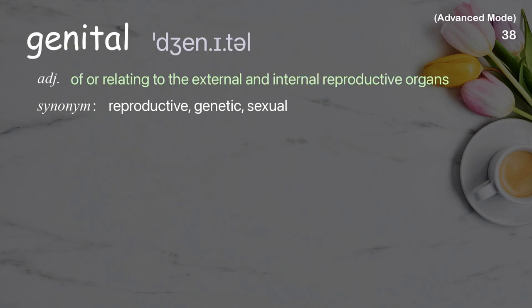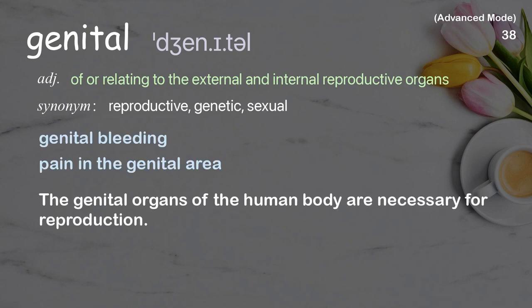Genital: Of or relating to the external and internal reproductive organs. Examples: genital bleeding, pain in the genital area. The genital organs of the human body are necessary for reproduction.